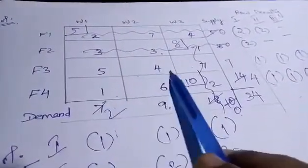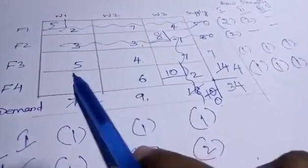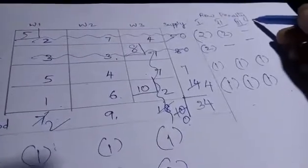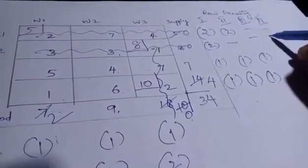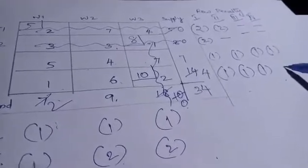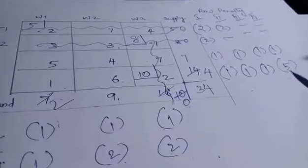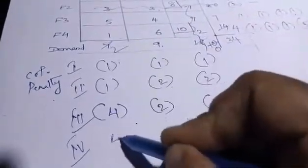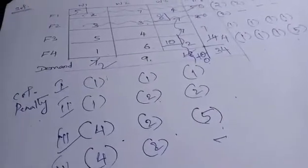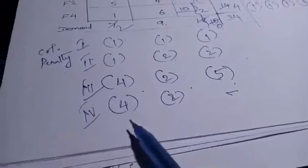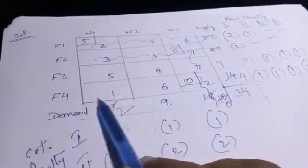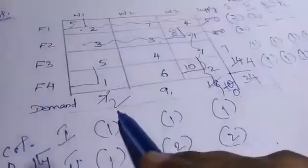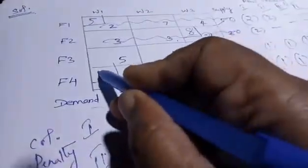Now remaining values are 5, 4, 1, 6. For the fourth penalty: row penalty 5 minus 4 equals 1, and 6 minus 1 equals 5. Column penalty: 5 minus 1 equals 4 and 6 minus 4 equals 2. The highest penalty is 5. Minimum value is 1. We allocate accordingly.